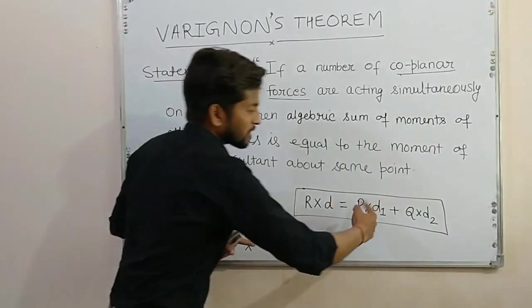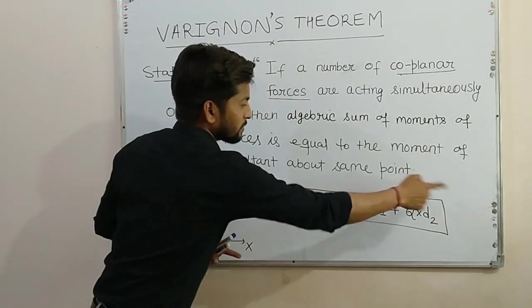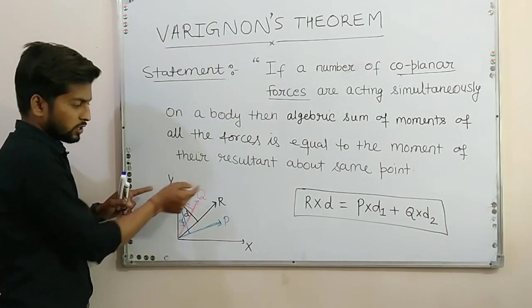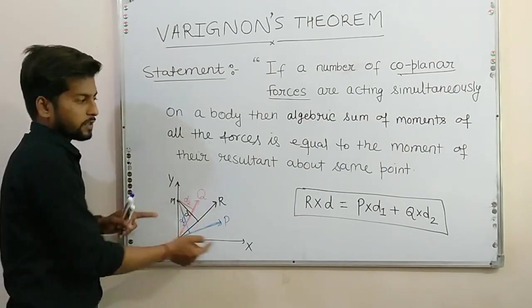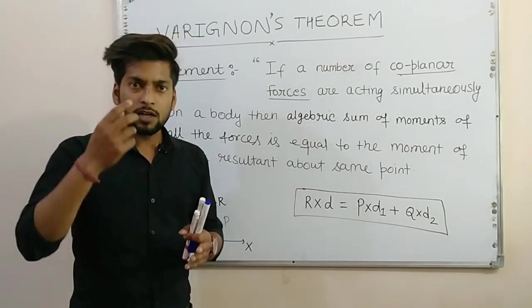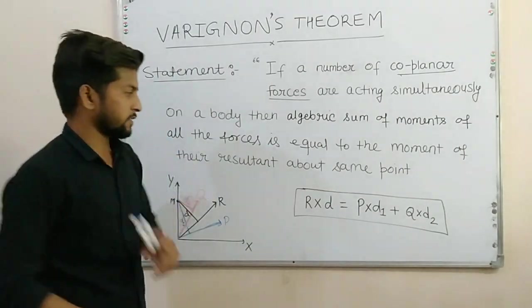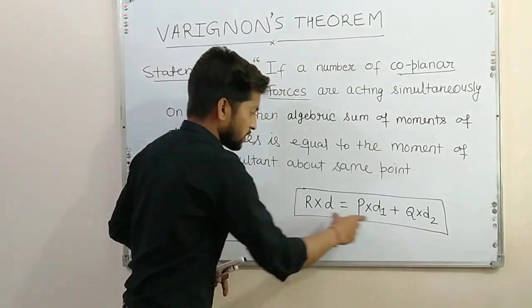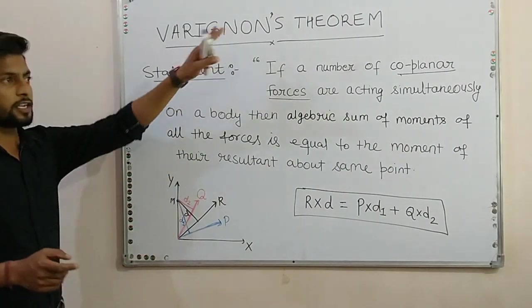Similarly, resultant's moment. The sum of these two forces will be equal to what? To the resultant of these two forces. The moment of the resultant of these two forces will be equal to their sum. The algebraic sum of the moment of the force is equal to the moment of the resultant. This is algebraic sum of the moment of forces and this is the moment of the resultant. This is Varignon's Theorem.